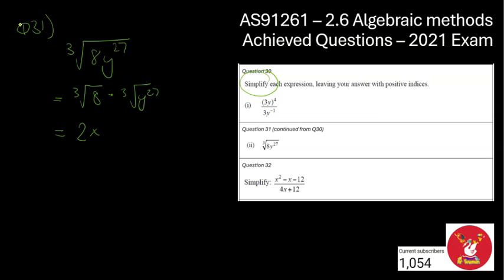But I know the cube root is the same as a one-third power. So what I'm going to do is I'm going to do y to the power of 27. And all of that is the power of one-third representing the cube root. And because I've got a bracket, I know I just need to multiply the two powers together. So that's going to become 2y to the power of 9.